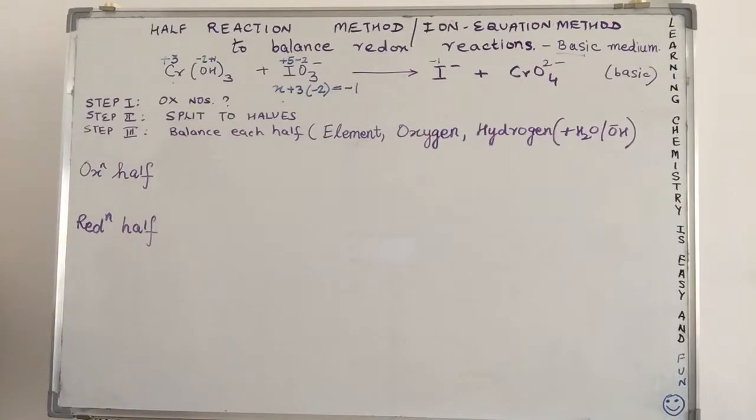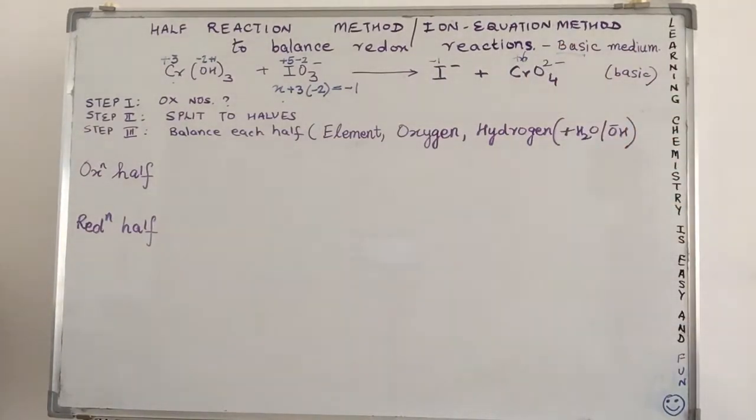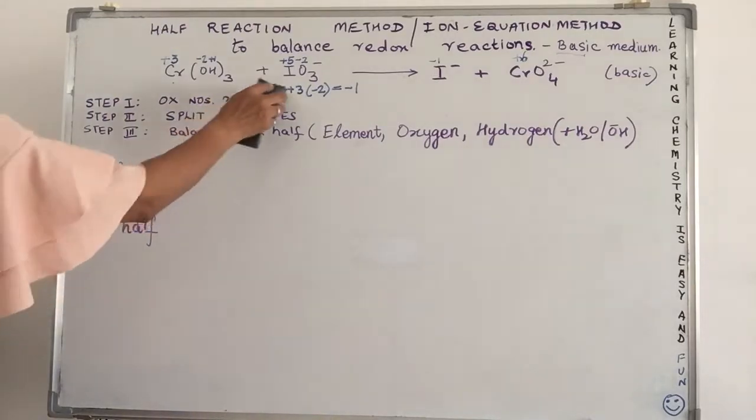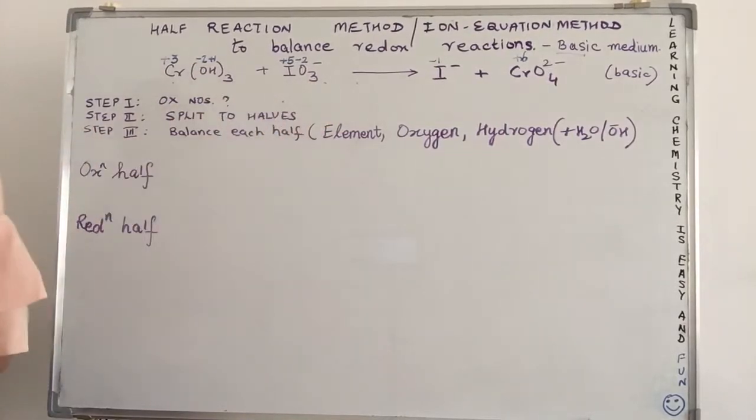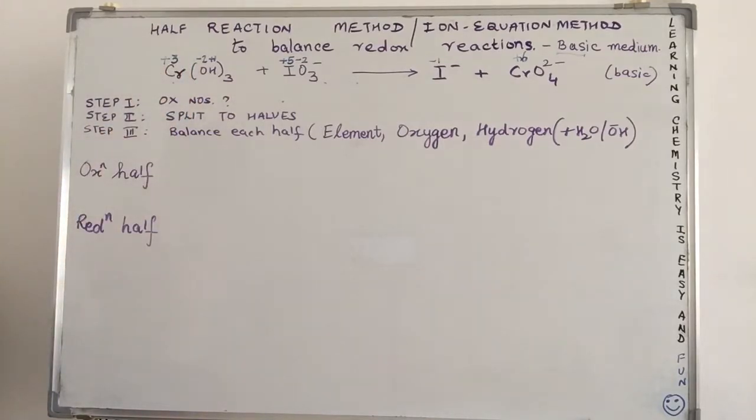I⁻ means its oxidation state is -1. For CrO₄²⁻, chromium is in the oxidation state of +6. Of course, our oxygen is -2 again. Now that we have got the oxidation states in place, let us now go on to the next step. Split it into half. That's the method, that's the name of the method. We divide the equation, the full equation, into two halves: the oxidation half and the reduction half. Oxidation half means oxidation number is increasing. Reduction half means that the oxidation number is reducing or decreasing.